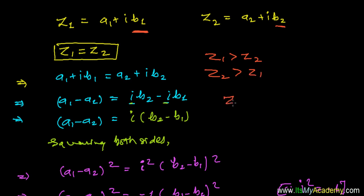Let's say Z1 equals to 4 plus 3i and Z2 equals to minus 3 plus 2i. So how can you say Z1 is bigger or Z2 is bigger? You cannot compare which one is bigger or smaller.